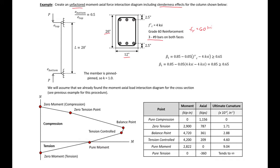We have a simply supported column with an axial load P applied at an eccentricity e-top at the top and e-bottom at the bottom. Our moment is equal to P times eccentricity, so our eccentricity tells us something about the ratio of applied moments. The ratio of our bottom eccentricity to top eccentricity is 0.5.